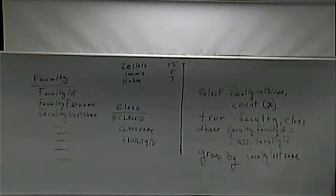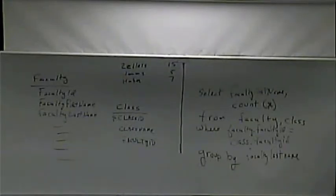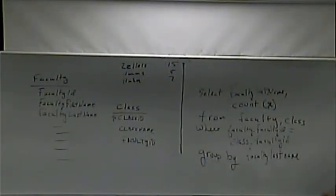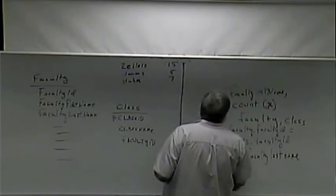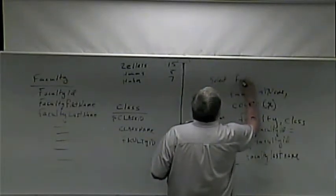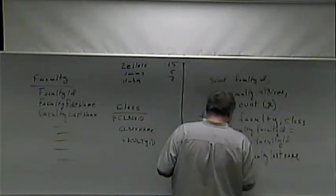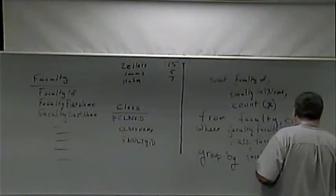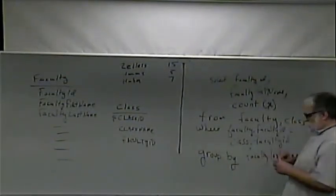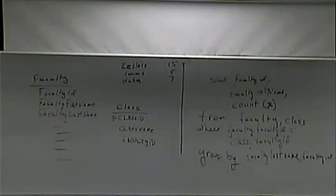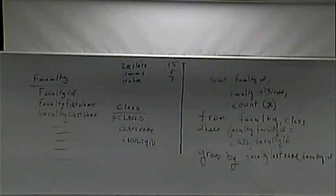To fix that, we'd SELECT faculty_ID as well, and GROUP BY faculty_last_name, faculty_ID — breaking it down by the combination of last name and faculty ID. Question from student: does GROUP BY sort of act like an ORDER BY? Yes, it does — GROUP BY also acts like an ORDER BY. That's like a bonus to it.